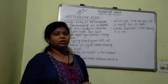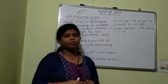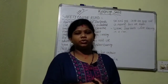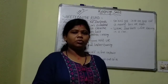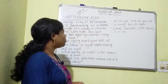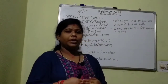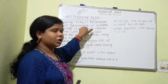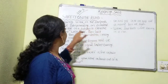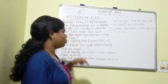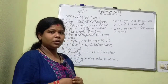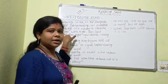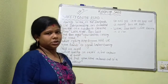Now, let's come to safety on the road. How do we stay safe on the road? There is a lot of traffic on the road, so we follow some rules. Always walk on the footpath. Use the zebra crossing to cross the road. Use the overhead bridge or subway to cross the road as well. While crossing the road, look to the right, then to the left, and again to the right before crossing.